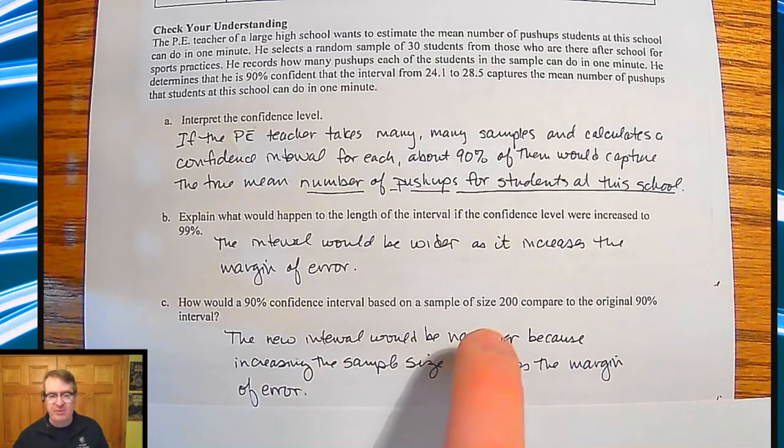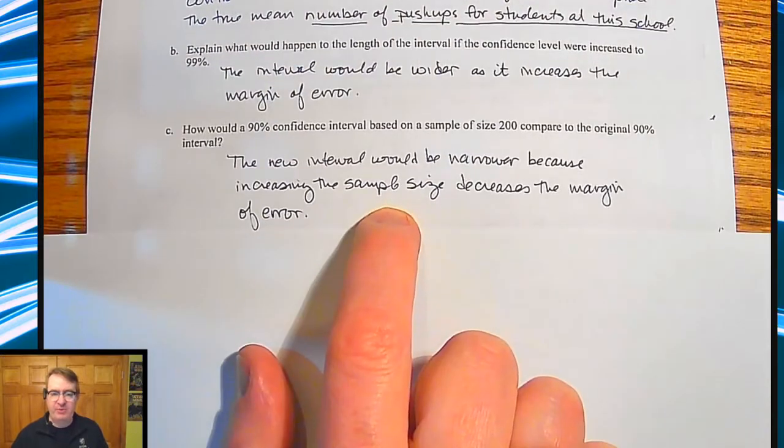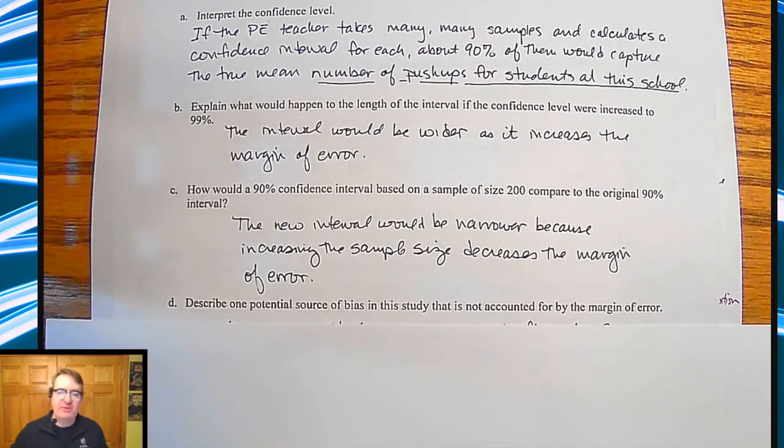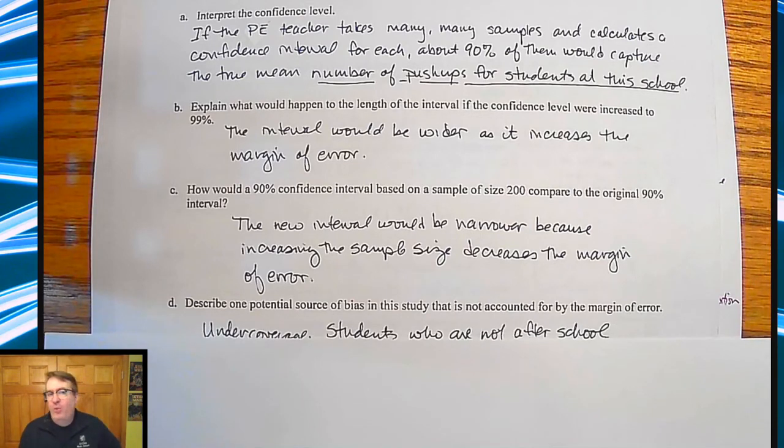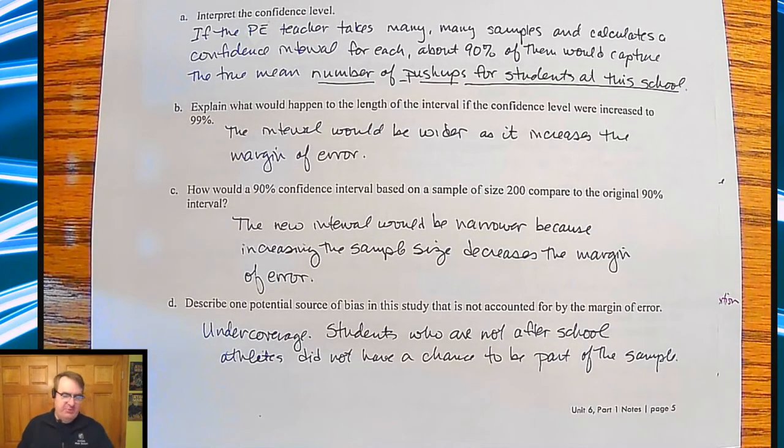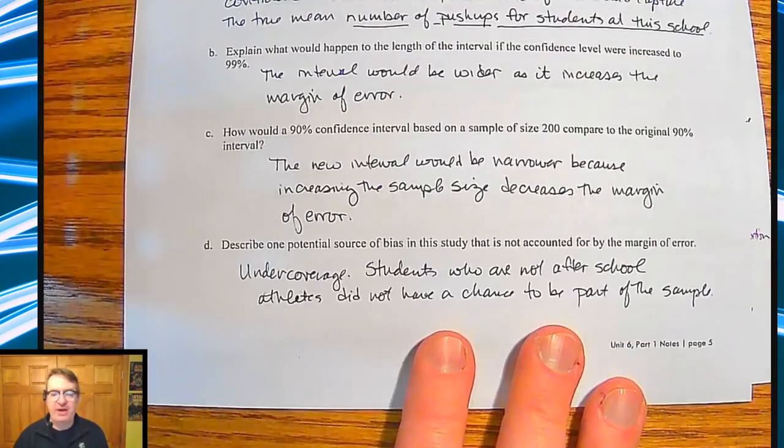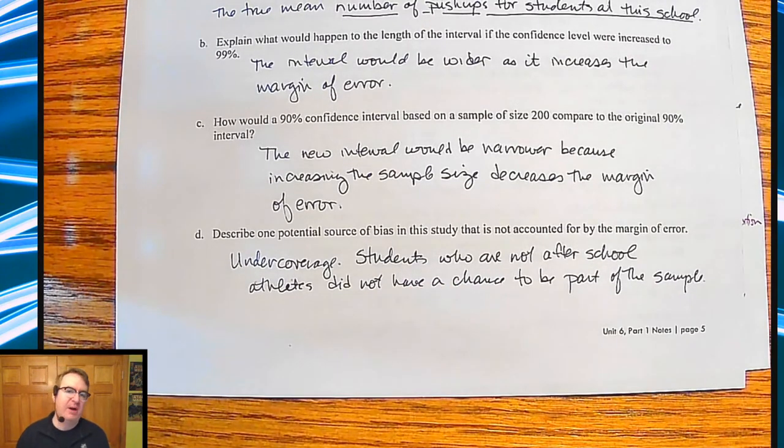And so again, when you're answering these, remember, it's not just enough to say what's going to happen. Please make sure that you say why. So describe one potential source of bias. We're pulling things back from other chapters. Wait until you get to the AP exam. It's going to put everything all together. So what's one of them? He's only talking to the kids who are there for after school sports practices. That's not going to be any good. What happens to the kids who are athletes who aren't there? What about the kids who don't participate in after school sports? Remember he says the mean number of pushups his students at his school can do in one minute. So it is going to be under coverage. He's missing parts of the population.